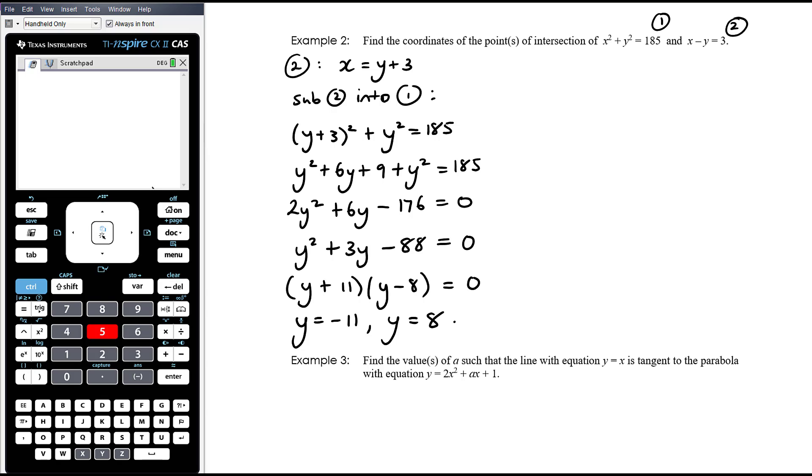Okay, so there's two points where these graphs intersect. One with a y coordinate of negative 11, and one with a y coordinate of 8. We need the coordinates, so we want the x coordinates. So we're going to go back into equation 2, the rearranged version up here.